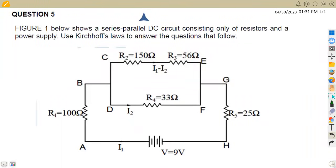Hello guys, welcome back to Mason African Motives, still working on Industrial Electronics N3, having revisions. We have got the question paper that we are going to be focusing on DC theory — that is the application or the use of Kirchhoff's laws. We are given a series-parallel DC circuit consisting only of resistors and a power supply.